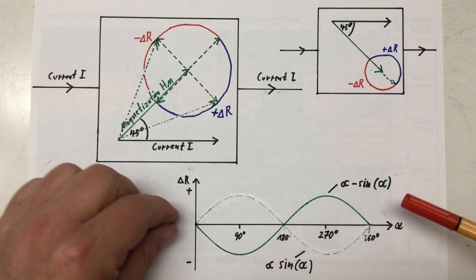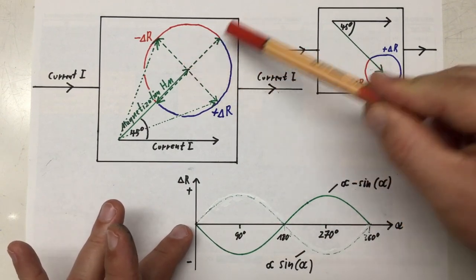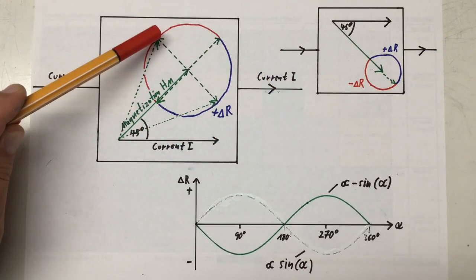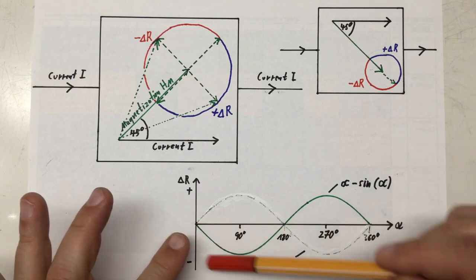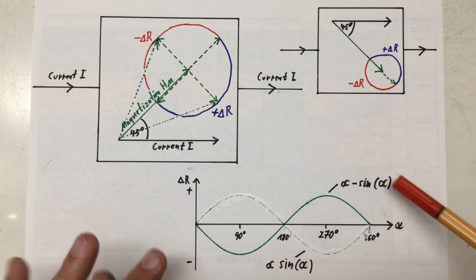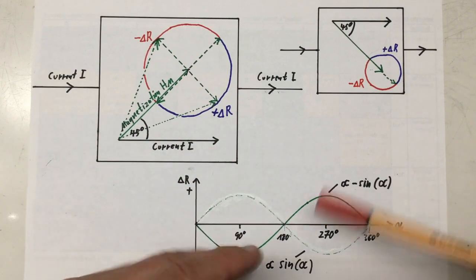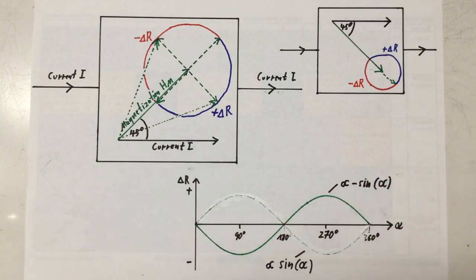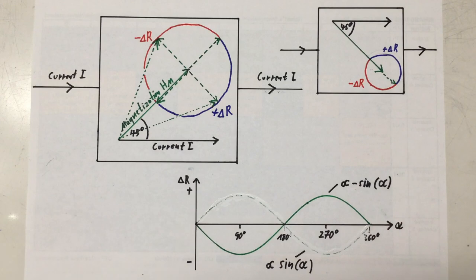And here we have the plot of the change of resistance, delta R, over the relative angle of our external field to our pre-magnetization. So, 0 degrees, 90 degrees, 180 degrees, 270 degrees, and back to 360 degrees. And that curve is now proportional to the negative sine of our angle alpha. So, no longer that 2 hertz funny business here, but really only one period, one sine curve.